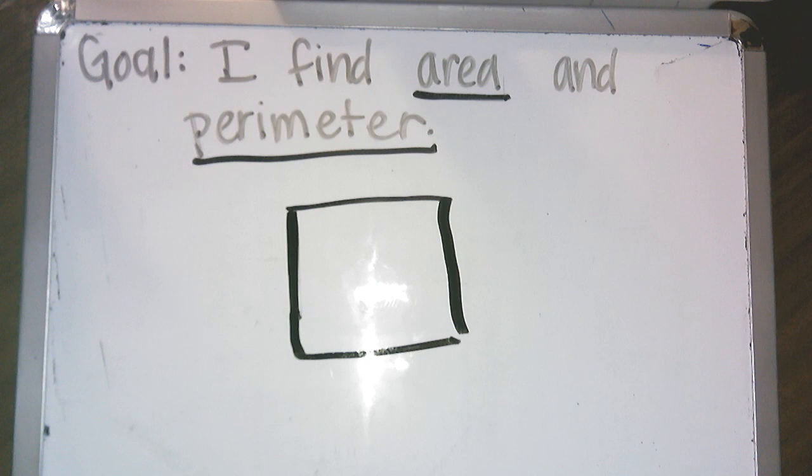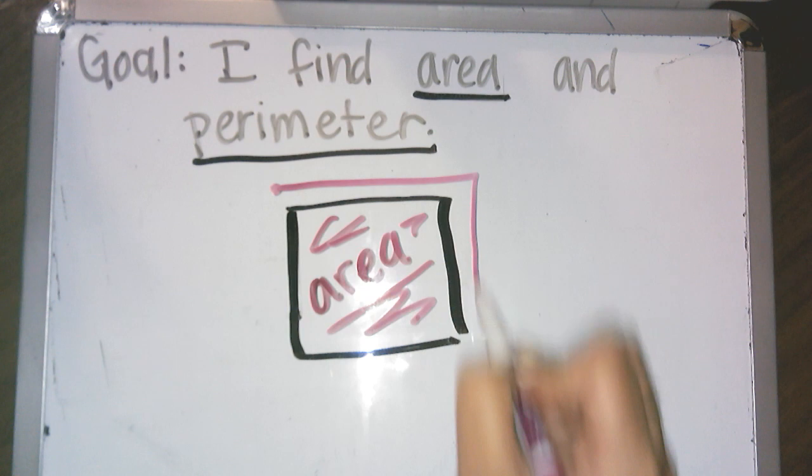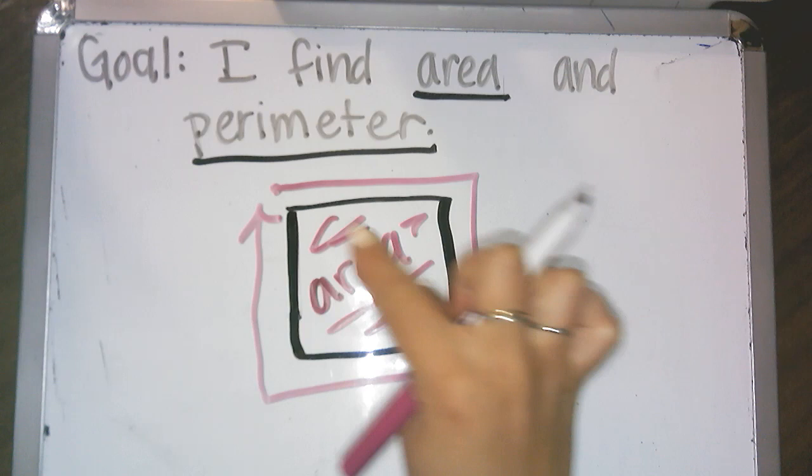So if we have a shape like a square, the area is the inside. How much space does it take up? The perimeter is if you started on the outside and you walked all the way around it. How far is that? So the area is the inside and the perimeter is the outside.